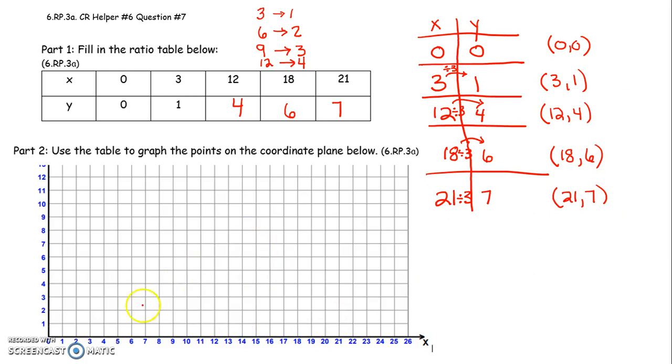And then you're just going to go ahead and plot those points. This is 0, 0. 3, 1. You start at 0, 0. You go 3 to the right, 1 up. That's the point 3, 1. 3 to the right, 1 up.